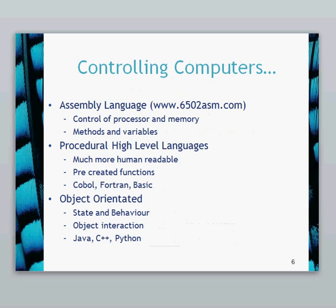Before we look at object orientation, just a quick reminder of how we got there. Earlier in the course, Dr. Jenkins gave you a good overview of the journey from binary to object orientation. One of the first steps on that journey was assembly language — through assembly language you could control the processor and memory. However, it was extremely complex and there were very limited pre-created functions, so you basically had to do everything yourself. I'd encourage you to go and have a look at that link there which gives an overview of assembly, and some great little programs including a couple of games, all written using assembly.